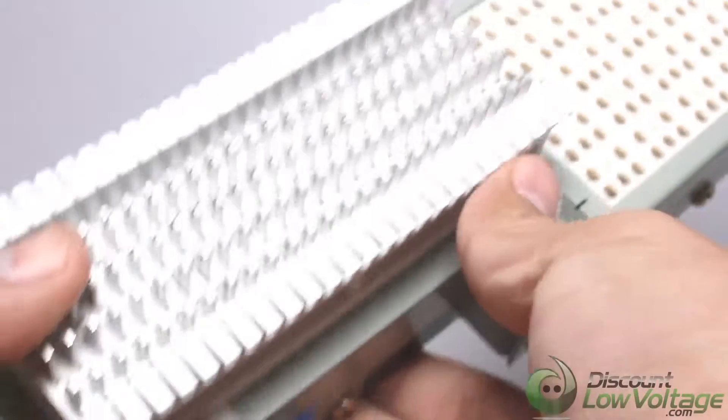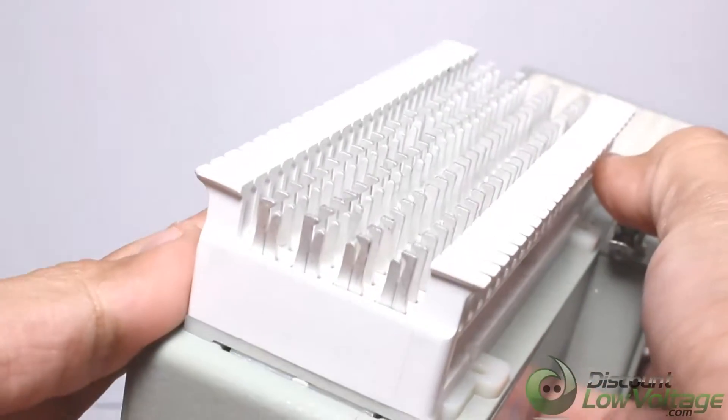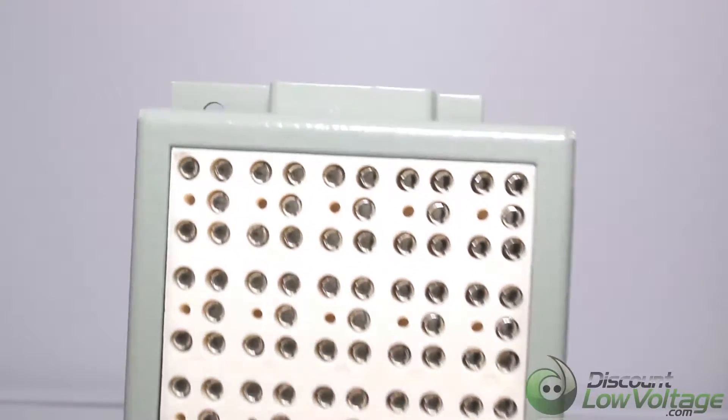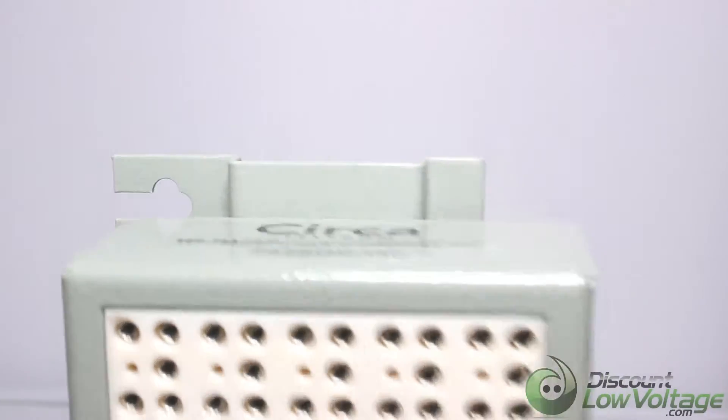UL approval standards on all terminals. Standard 5 pin protector modules available in analog and digital versions can be purchased separately or loaded. The CR 2625 QCQC is a 25 pair 66 block. The protection modules are sold separately.